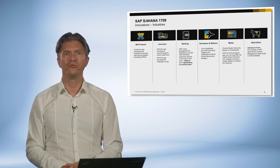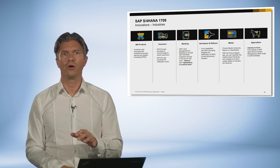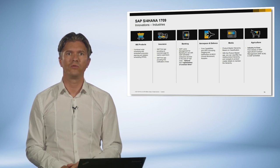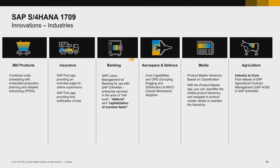Moving to banking, the offering includes enterprise services in the area of rollover, deferral, and capitalization of overdue items for use with the SAP loans management for banking package. For media, the application provides master data objects to allow financial reporting at the title level. Some quite interesting innovations are available in insurance too. For example, the ability to enable insurance customer service representatives to capture the first notification of loss when an insured or claimant calls to report a car accident, the ability to support capturing of loss details including vehicle damage, claimant and witness data, and notes, and the ability to provide information like name and phone numbers about the assigned claim handler once the claim is created.